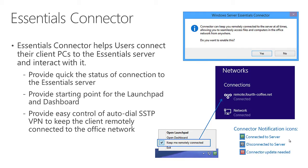The Essentials Connector has just a few things it allows you to do. When you right-click on the little green icon in the notification area - which may be hidden and require clicking the up arrow to reveal - you'll see a few different options. You can still open the Launchpad, which used to happen automatically but now you can choose to do it when needed. You can also use the connector to open the dashboard directly, more quickly than going through the Launchpad.